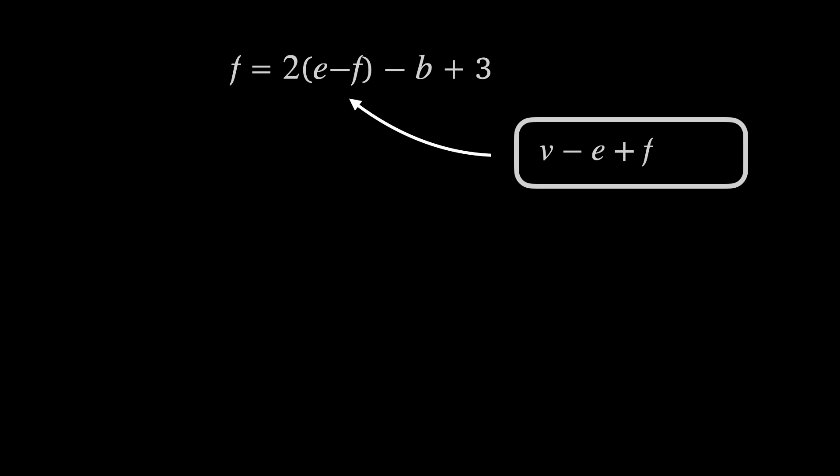Remember Euler's formula? V minus E plus F equals 2. Well this gives E minus f equals V minus 2. Remember V is the number of nodes, which for our triangulated lattice polygon is equal to the number of lattice points. That's the number of interior lattice points i plus the number of boundary lattice points b. Tidying this up and to summarize, we find that f is equal to two times the number of interior lattice points plus the number of boundary lattice points minus one.